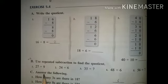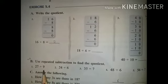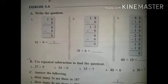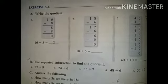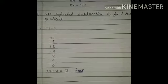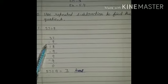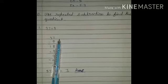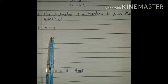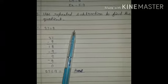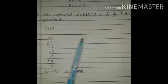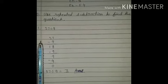We have the quotient — pointed, pointed. And now we have the quotient, pointed. Use repeated subtraction to find the quotient.